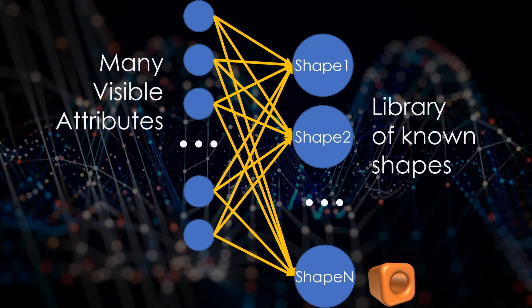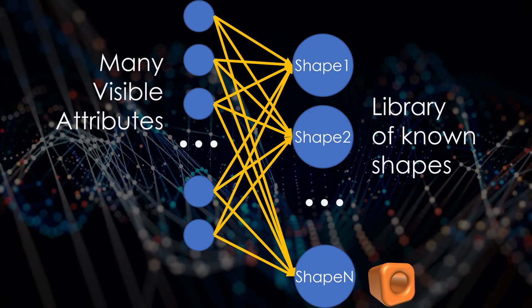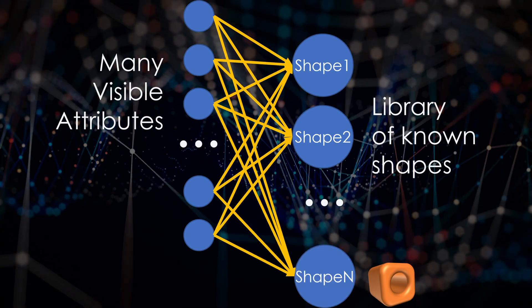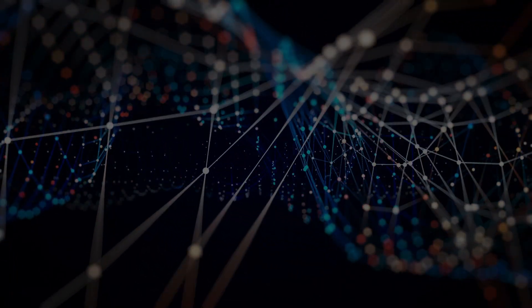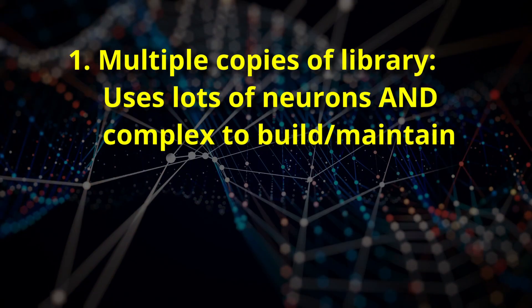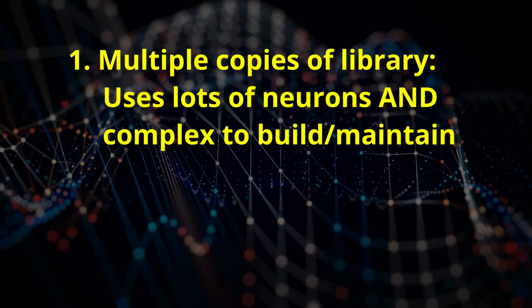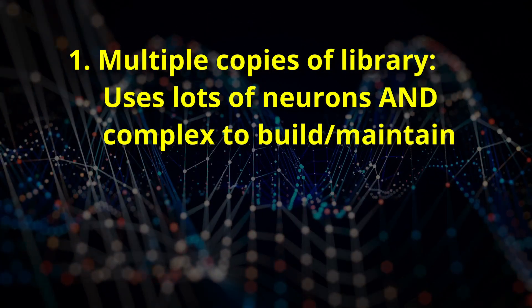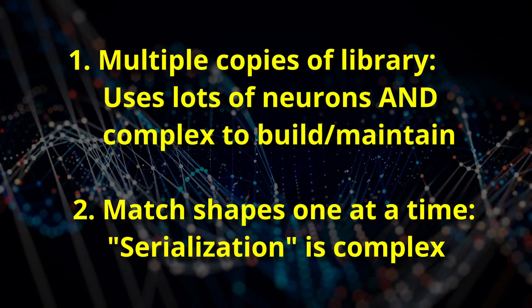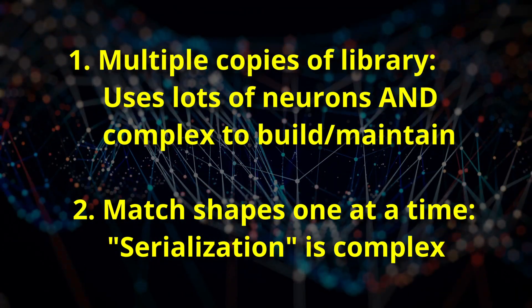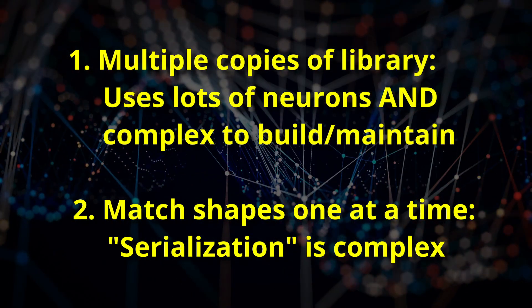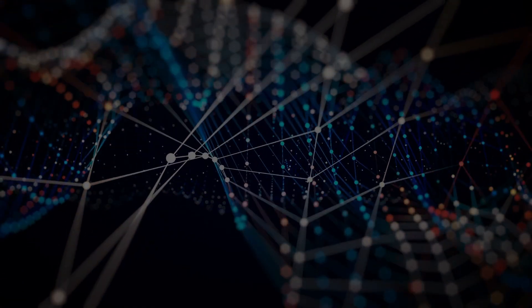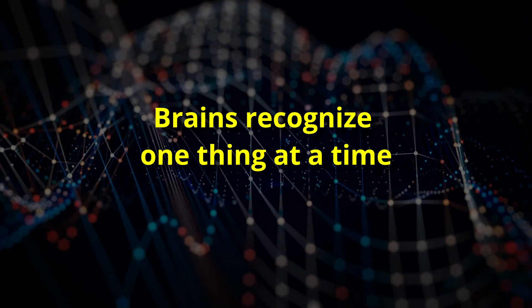But here's a problem. Only one shape can fire first or most. So this library of known shapes can only recognize one shape at a time, the first or strongest to fire. So there are only two possibilities. Your brain has multiple copies of the connections and neurons that represent the entire library of known shapes, or your brain matches shapes one at a time and switches between shapes so quickly that it feels simultaneous. Which one is it? Well, studies suggest the second alternative. This means that even though it feels simultaneous, your brain is actually recognizing things one at a time.